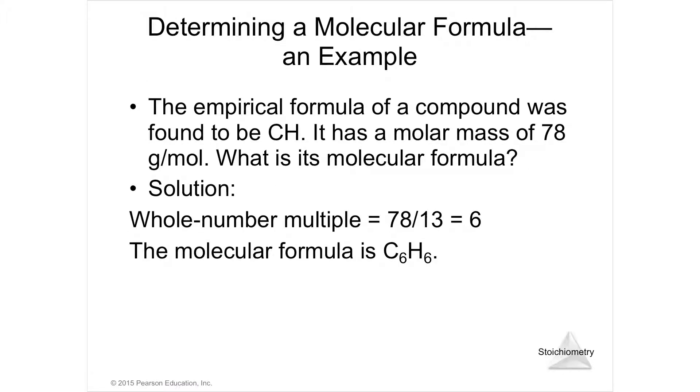Here's an easier example. They found the empirical formula was CH. They're going to tell us the molar mass of this molecule is 78 grams per mole. What is the molecular formula? I need to know what the mass of my empirical is. One carbon and one hydrogen, that's 12 plus 1, that's 13. So my empirical formula weighs 13. The real molecule weighs 78. How many times does 13 go into 78?